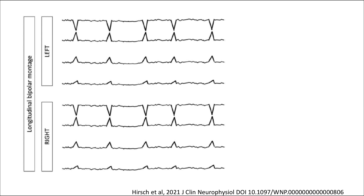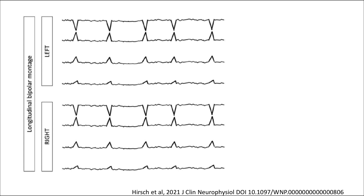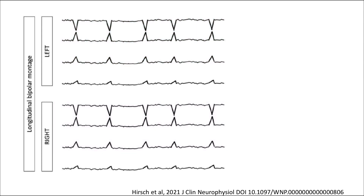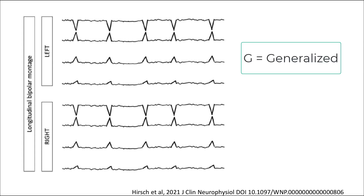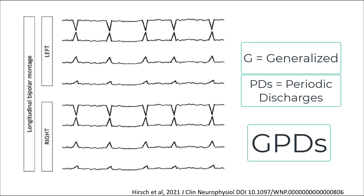Here is an example of generalized periodic discharges. These waveforms are of similar amplitude and morphology on both the left and right hemispheres, which is why we define this as generalized. We use the first term G or generalized, and the second term PDs or periodic discharges because of the clear inter-discharge interval, giving us generalized periodic discharges.